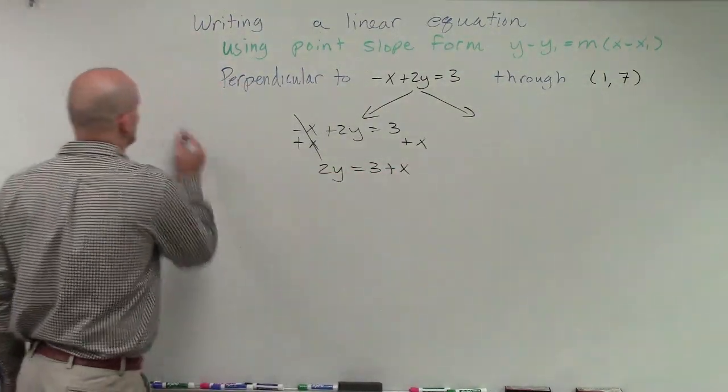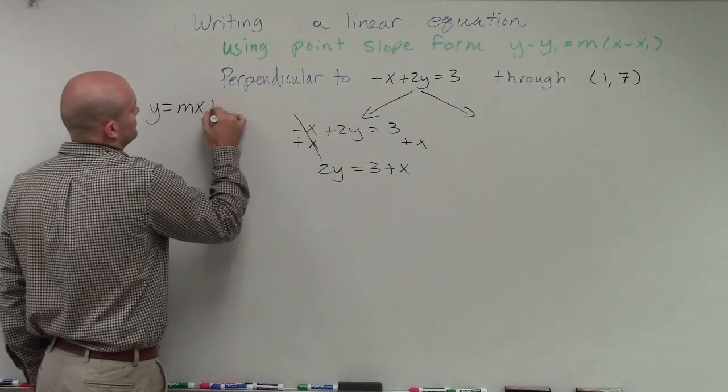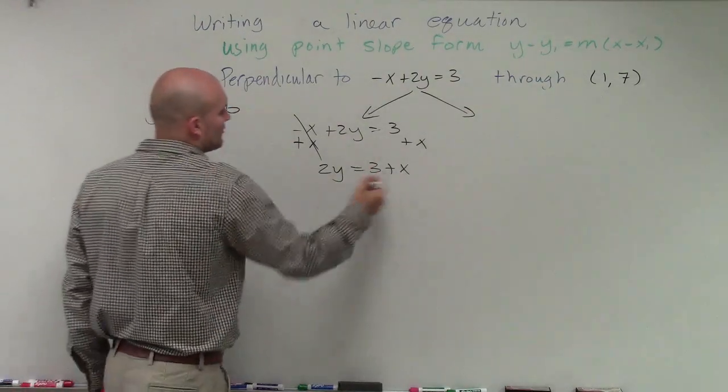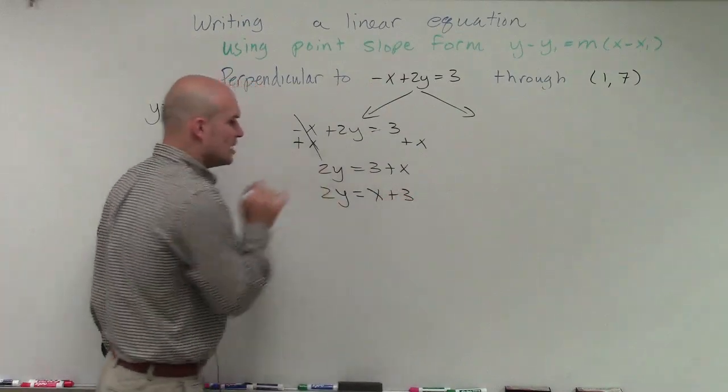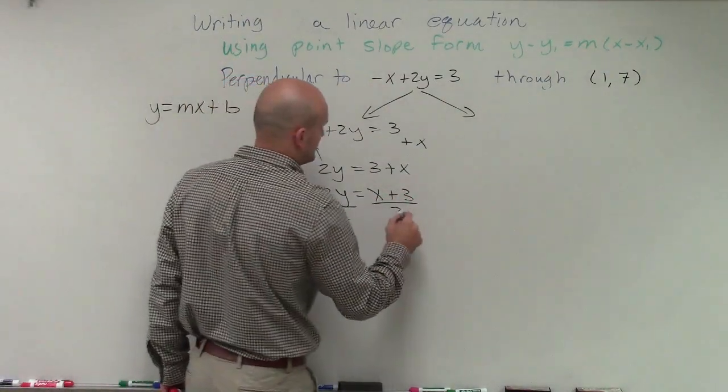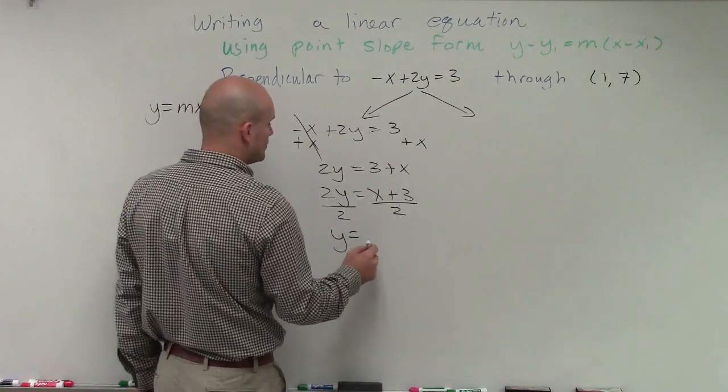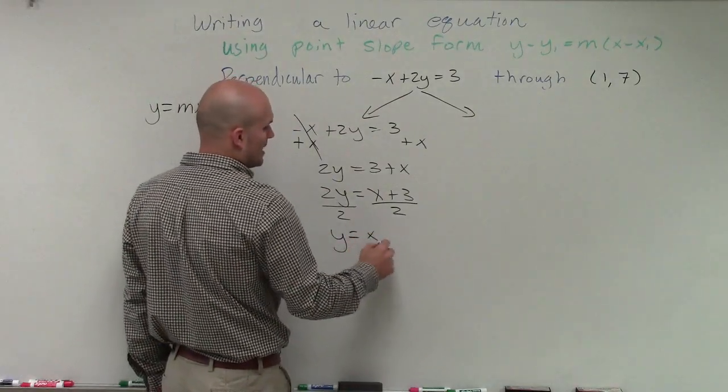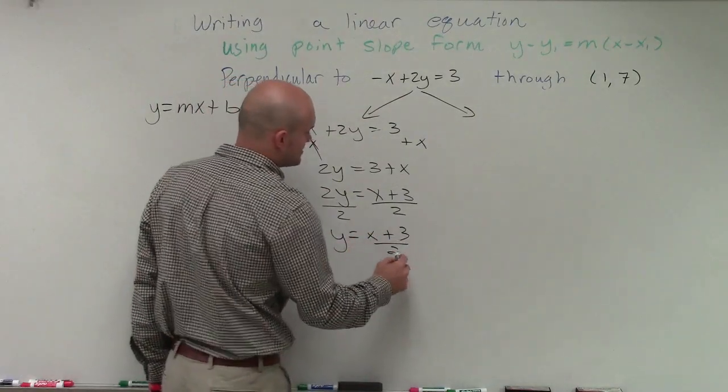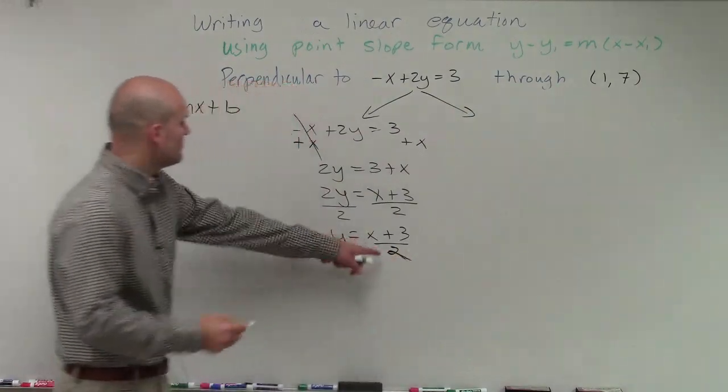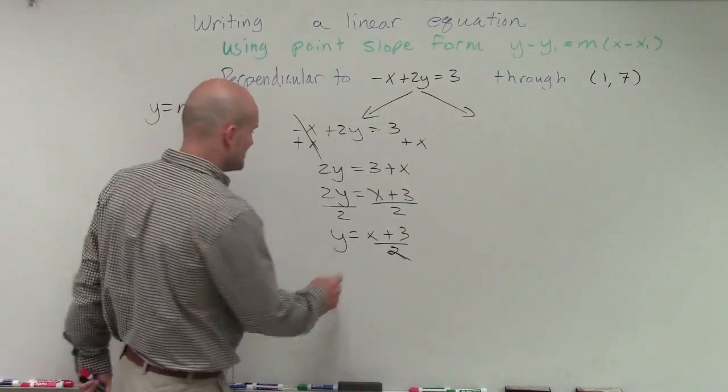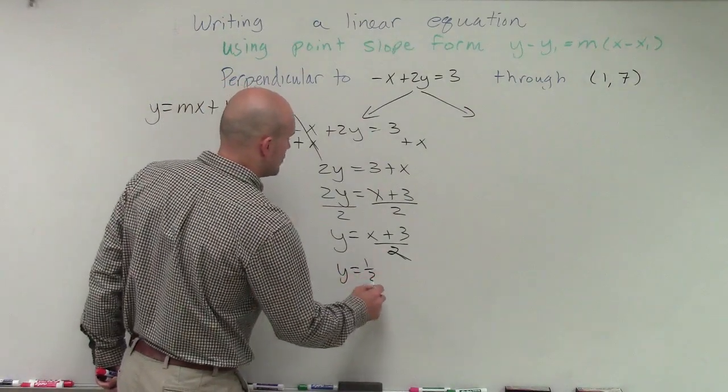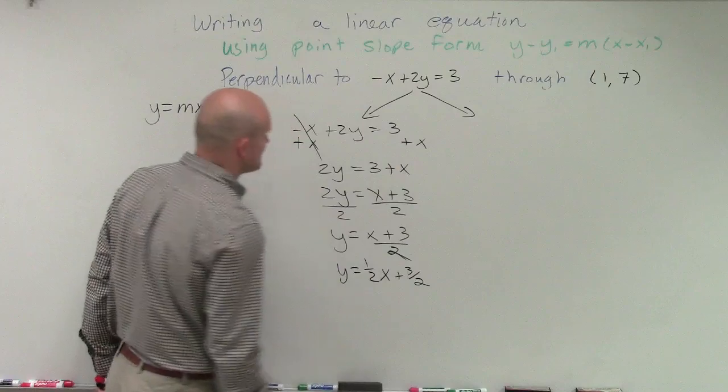However, writing it in slope-intercept form, we want to write our variable first in front of our constant. Then, to undo the 2, I'm going to divide by 2. So I have y = (x + 3)/2. But we want to make sure it's written in this format, so I need to divide my 2 into both my terms. So I have y = (1/2)x + 3/2.